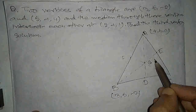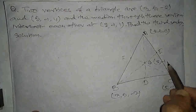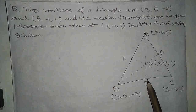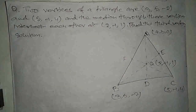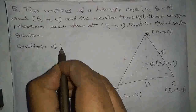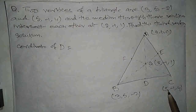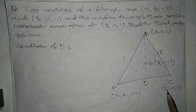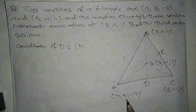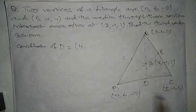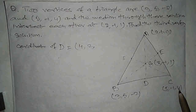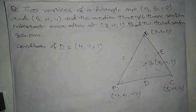यहाँ G का coordinate दिया गया है: (2, -1, 1)। अब देखिए — AD median है, कहने का मतलब BC का midpoint D है। तो coordinate of D होगा: x = (3+5)/2 = 8/2 = 4; y = (5 + (-1))/2 = 4/2 = 2; z = (-2+4)/2 = 2/2 = 1। D का coordinate हो गया (4, 2, 1)।